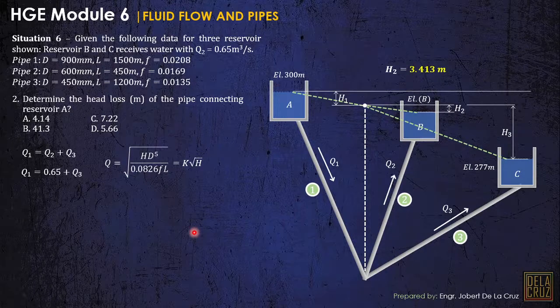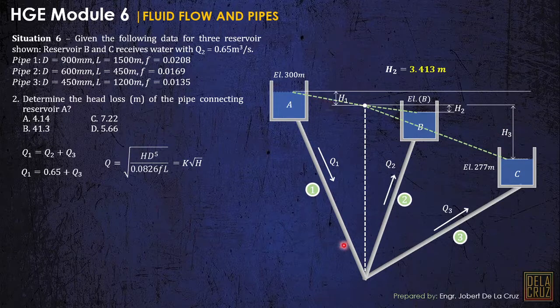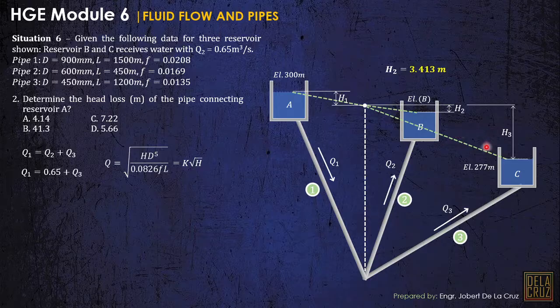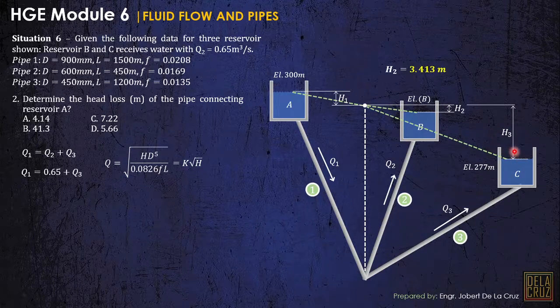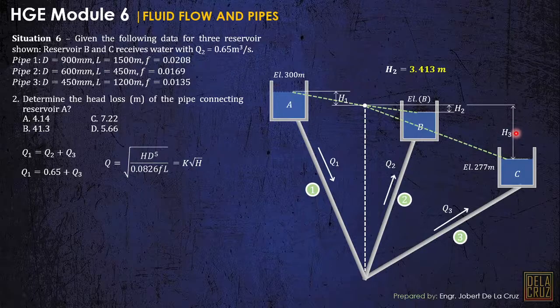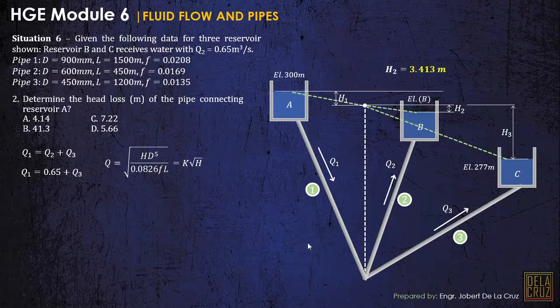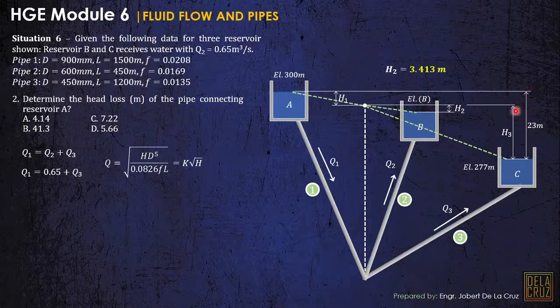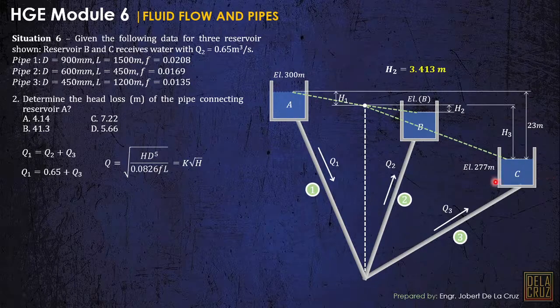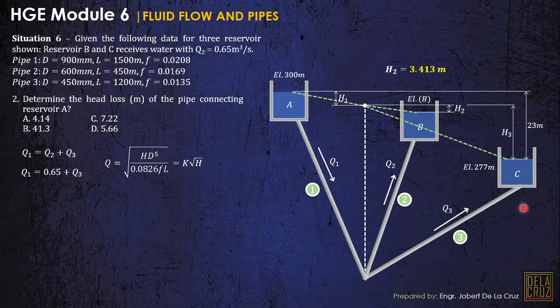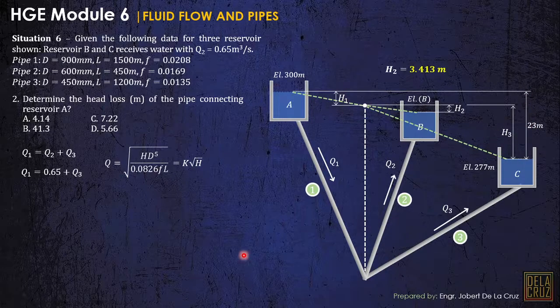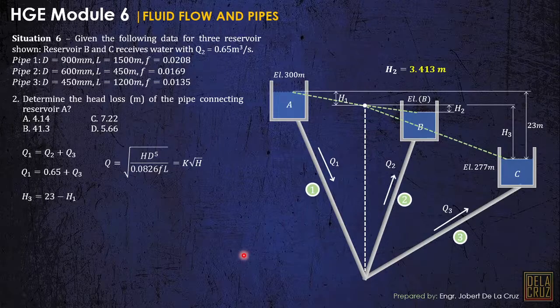Now, we'll be expressing one head loss. It's easier to express head loss at 3 to head loss at 1. Remember that we have here the given elevations of A and C. So express one of their head losses. It's easier if H sub 3 is expressed to H sub 1, so we only have one head loss. As we can see, the difference in elevation between A and C, that is 300 minus 277, and that is 23 meters. So therefore, H sub 3 is equivalent to 23 minus H sub 1. That's the use of our elevations.